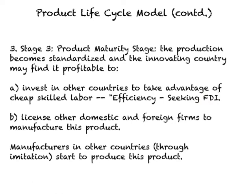Another option firms find profitable is to license the technology to other domestic and foreign firms to manufacture the product. Another possibility in the third stage is that manufacturers in other countries, through imitation, can start to produce this product, even if the original company in the innovating country does not permit it.